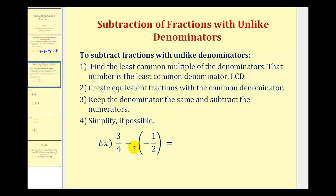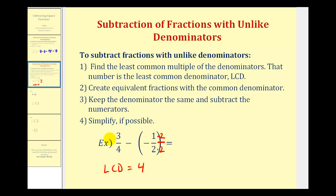Here we have three-fourths minus negative one-half. The first step is to determine the least common multiple of four and two, which will be our LCD. We can think of this as the smallest number divisible by both four and two, which is four. For the fraction one-half, if we multiply the denominator two by two, we get the common denominator of four — and we can do this as long as we do the same to the numerator, since multiplying by two over two is the same as multiplying by one.